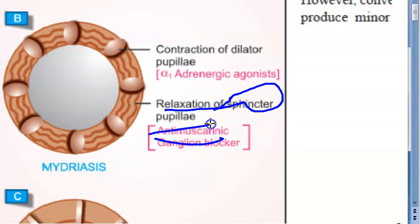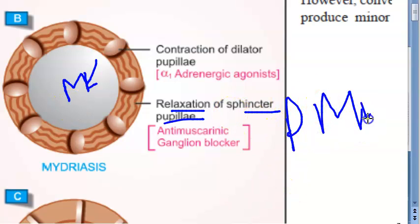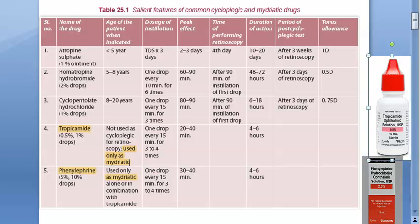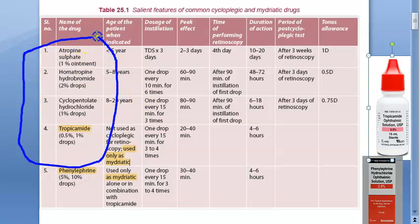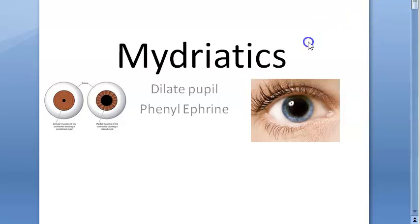Anti-muscarinic drugs act on M3 receptors and relax the sphincter pupillae. If the sphincter pupillae has relaxed, it cannot go into miosis — it cannot contract — so this results in a passive mydriasis. These four anti-muscarinics cause passive mydriasis, and they also cause cycloplegia, which means accommodation does not happen. Cycloplegia is covered in a separate video; here we are focused only on mydriatics.